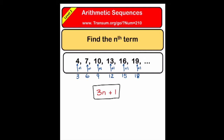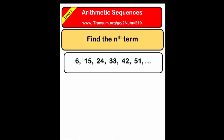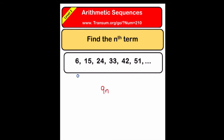Here n is the counting numbers one, two, three, four, five as we go through the terms of the sequence. In the second example, we have six as the first term, then fifteen. The common difference is nine — we keep adding nine on each time. That's similar to the nine times table. Writing down the nine times table underneath, I can see we need to subtract three each time from the nine times table to get the given sequence. So the whole formula is nine n minus three.